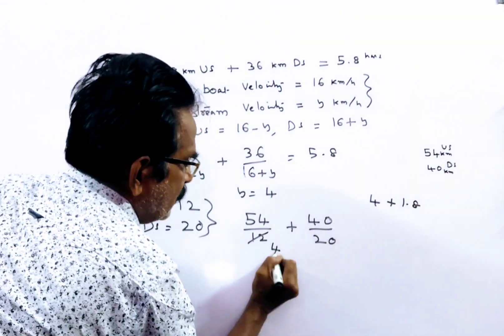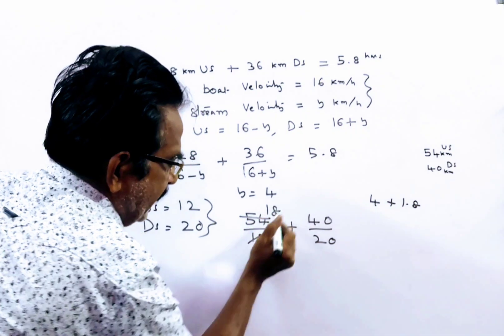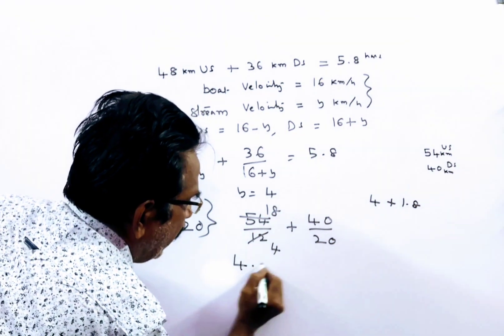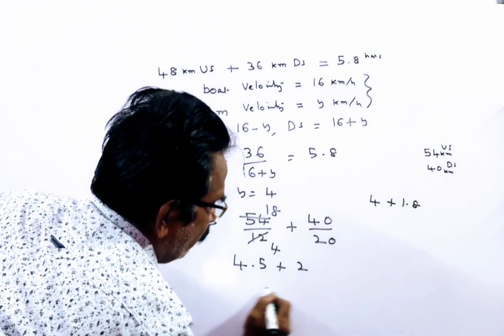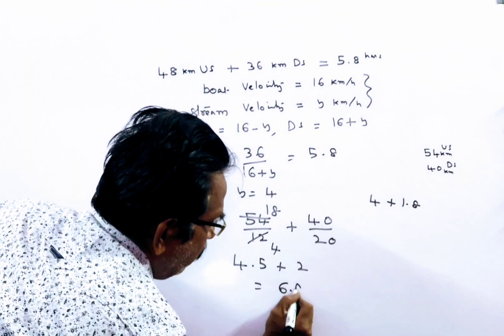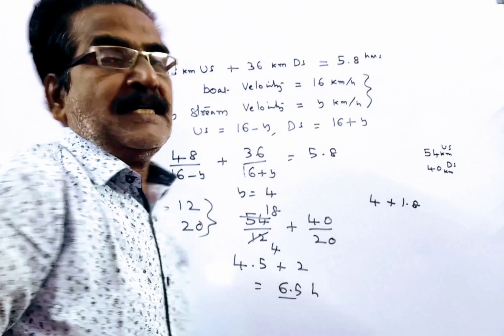54 by 12 simplifies to 18 by 4, which means 4.5 hours, plus 40 by 20 equals 2 hours. Total, 6.5 hours is your answer.